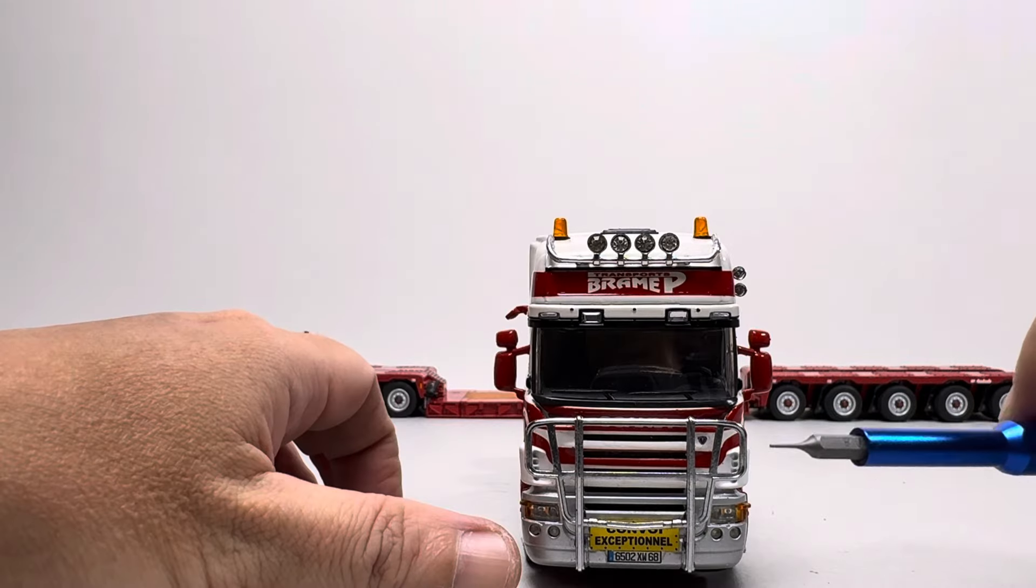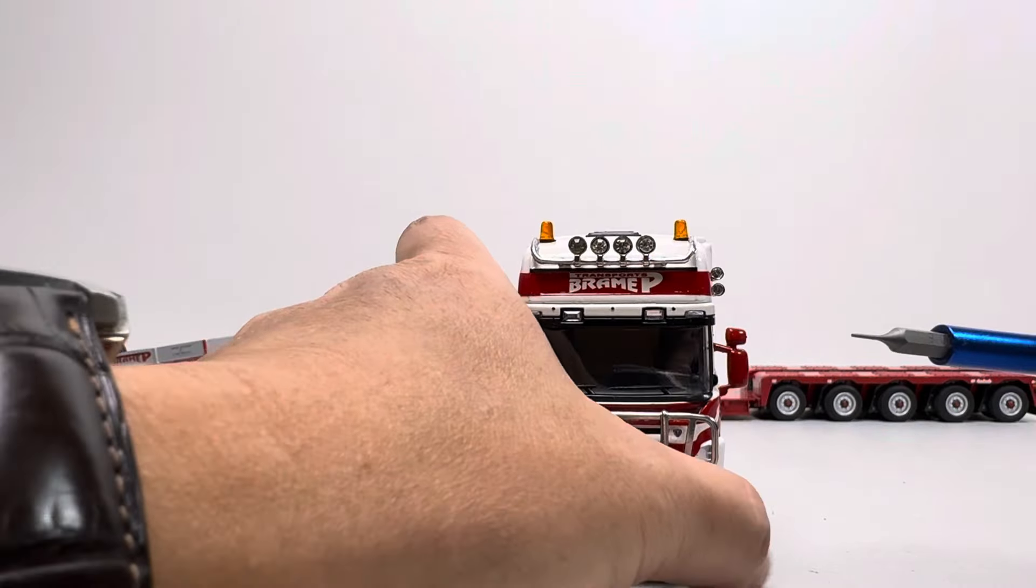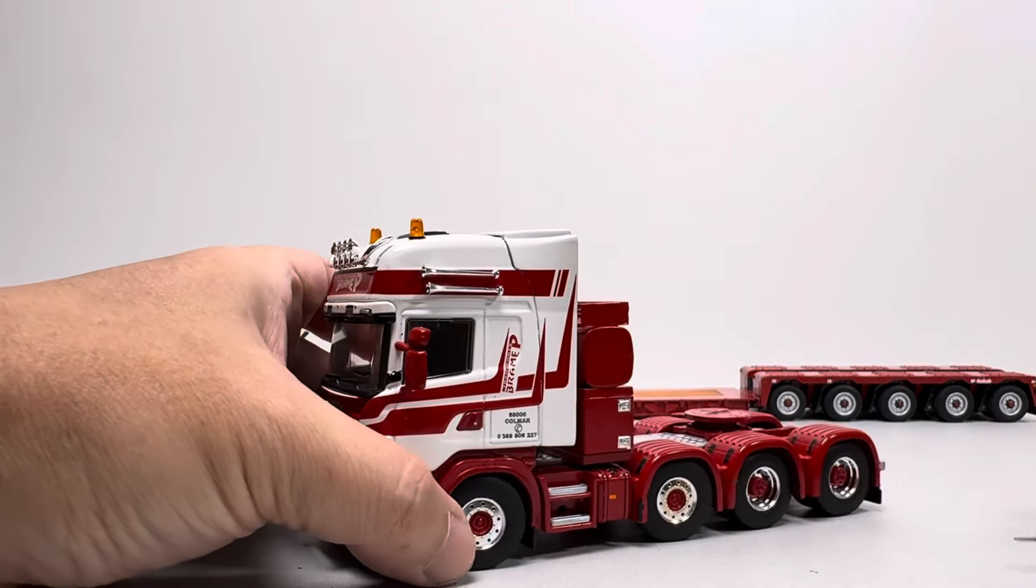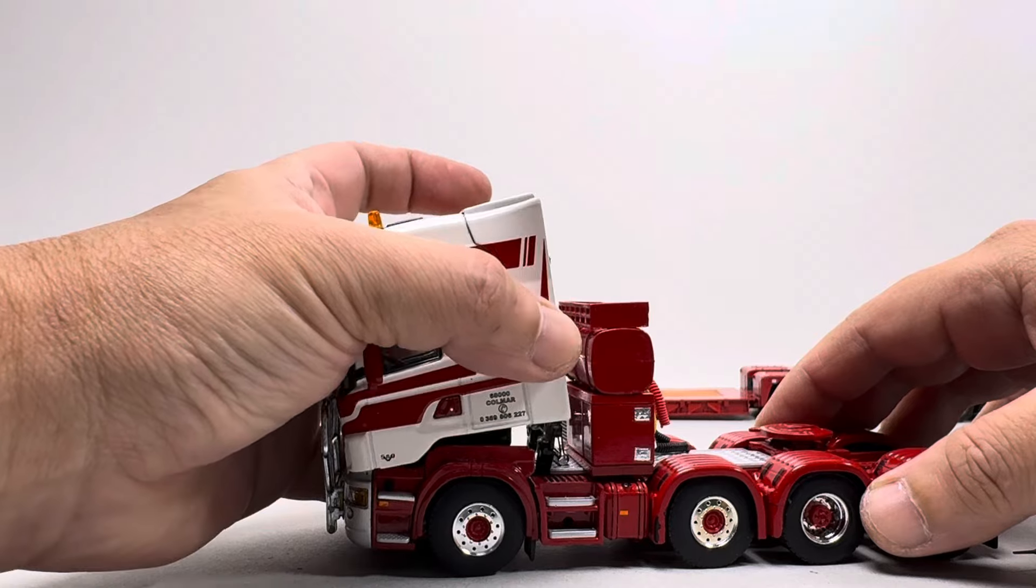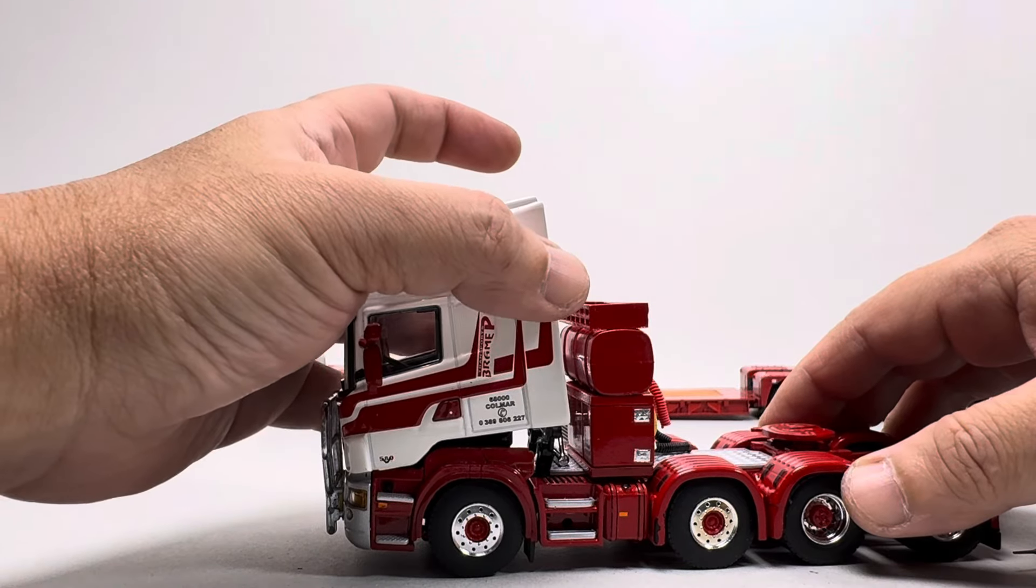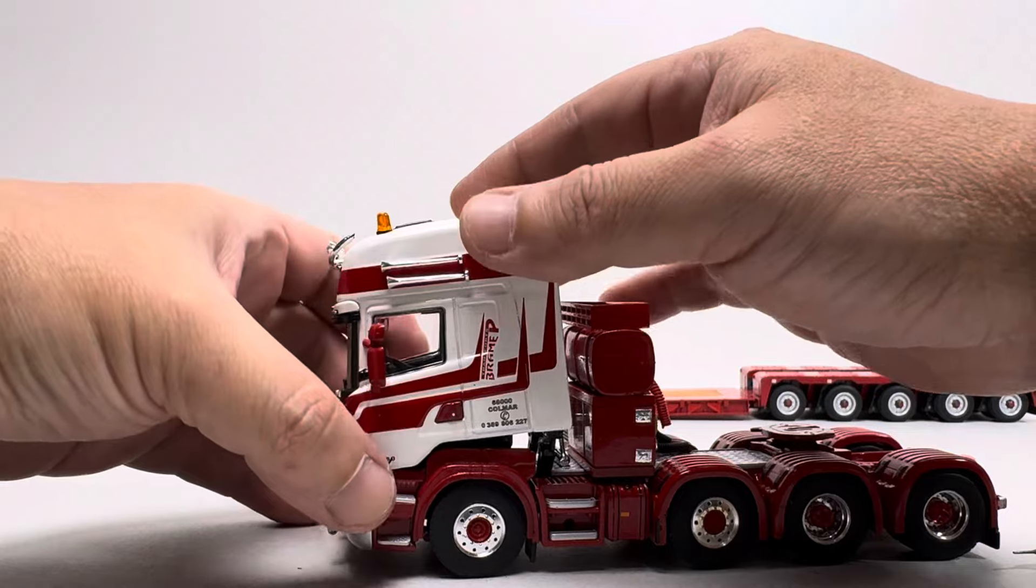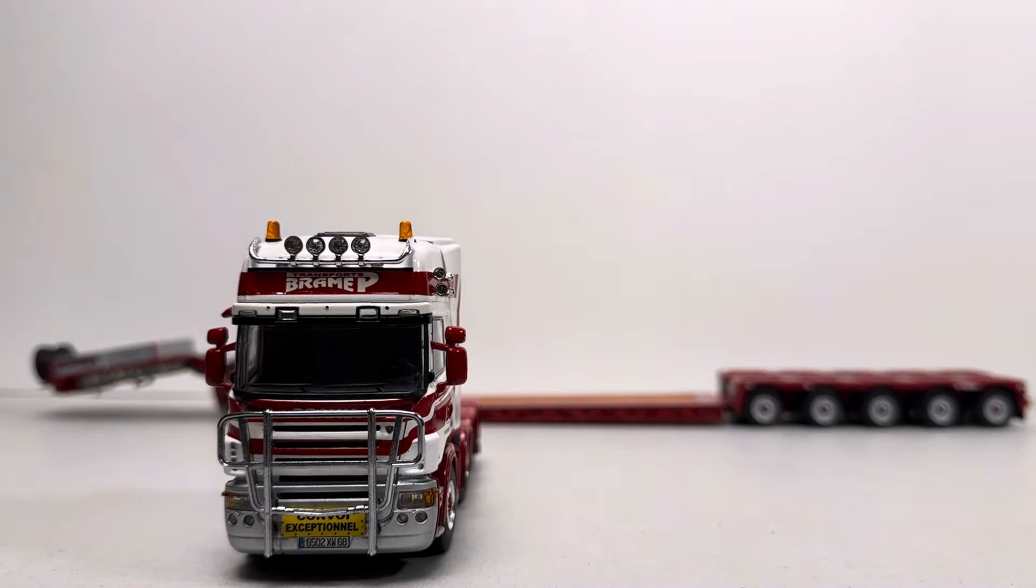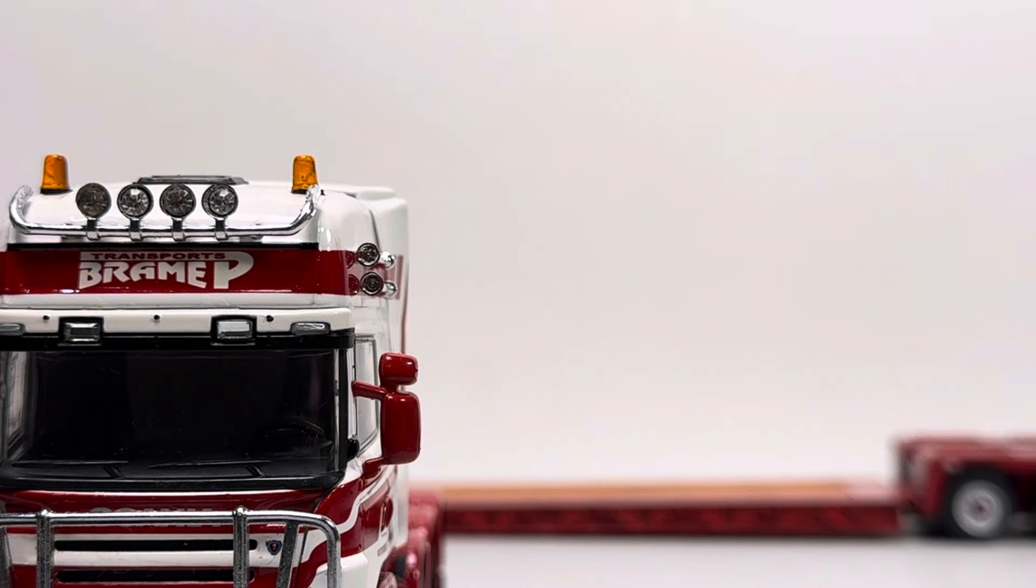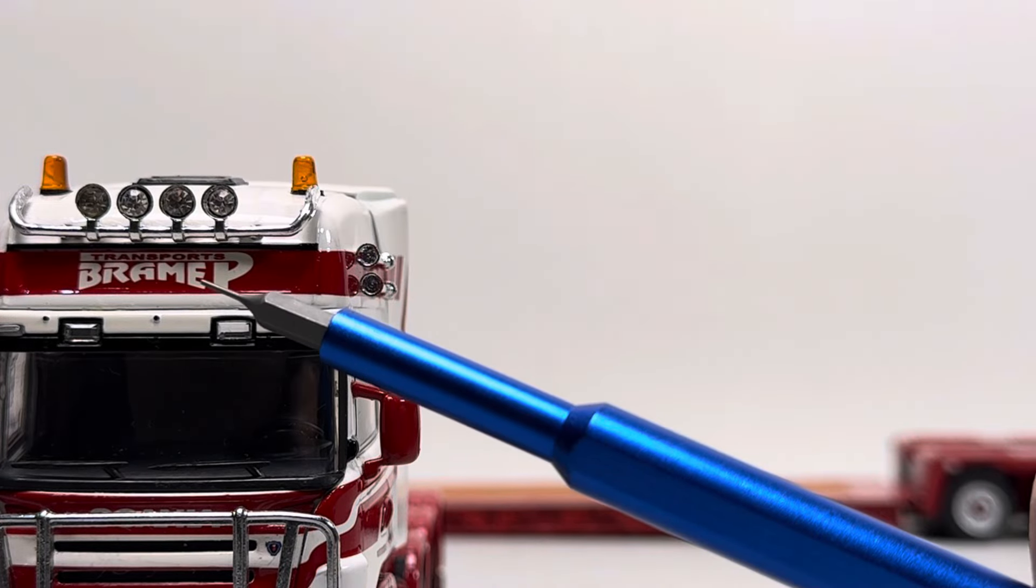Dan dia ini ada bumper guard ya. Jadi cuman dia kalau ada itu kita gak bisa buka ini ya, kita gak bisa lihat dalaman mesinnya karena kehalang oleh bumper guardnya. Kalau kita perhatiin dia tulisannya Rempy.